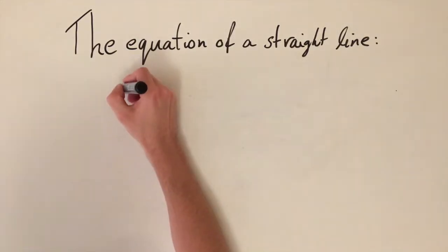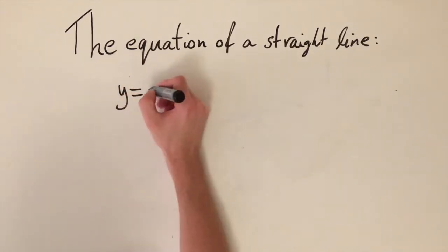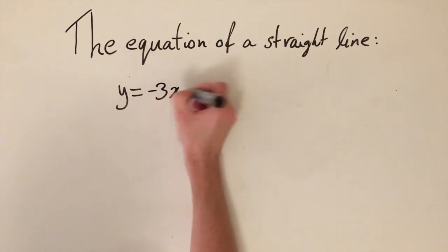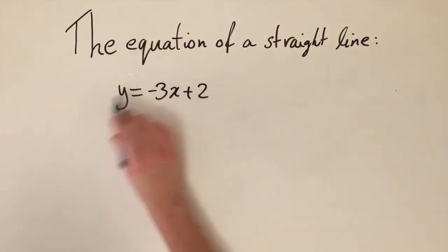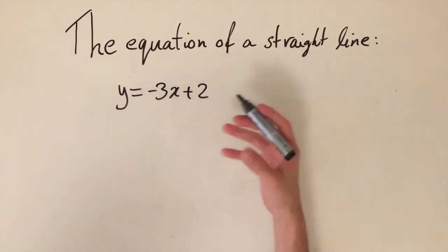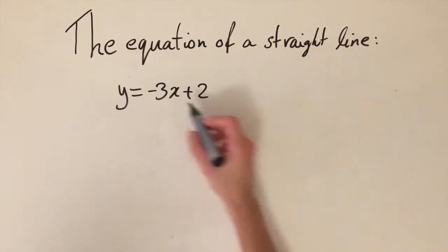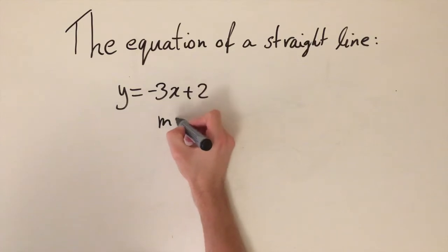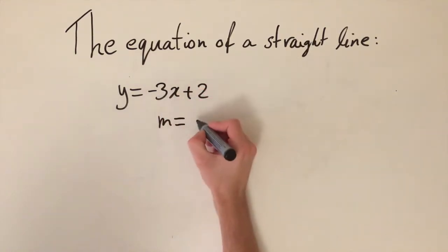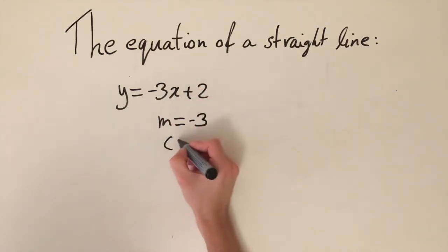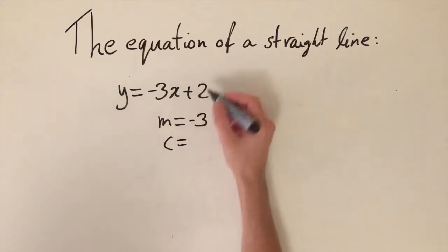So firstly, if we just look at a very simple example, we're going to do y is equal to minus 3x plus 2. Now this is already in the y equals mx plus c form, so we don't have to rearrange anything to get the information. So we can just read off that the gradient is the x coefficient, so this is minus 3, and the y-intercept is just the constant at the end, so this is 2.